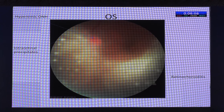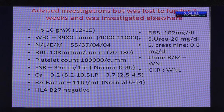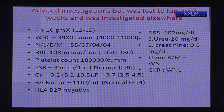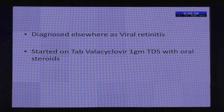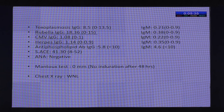On examination, the right eye had best corrected visual acuity of 6/6 with typical posterior placoid retinochoroiditis, while the left eye had vision of hand movements close to face with some anterior uveitis, a hyperemic optic nerve head, typical intraretinal precipitates, and a patch of retinochoroiditis. She was lost to follow-up for three weeks and investigated elsewhere with a whole gamut of irrelevant investigations — Mantoux was zero — and was diagnosed elsewhere as viral retinitis and started on tablet valacyclovir 1g TDS with oral steroids.